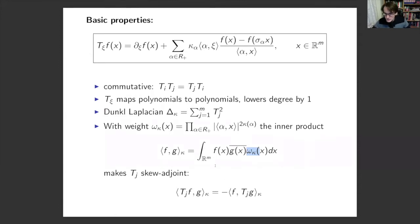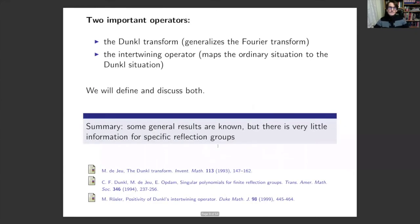One can also introduce a weight omega_k, given by products of inner products with root vectors to a certain power, selected so that the Dunkl operators become skew-adjoint: T_j(f) inner product with g equals minus f inner product with T_j(g). When kappa is zero, the measure becomes just one, and this is the basic property of the partial derivative — integration by parts.